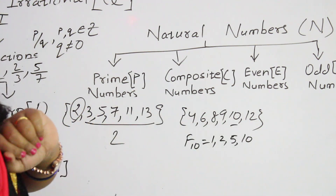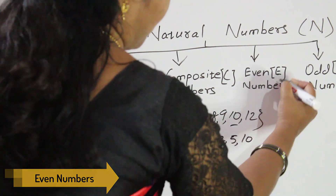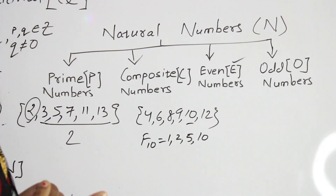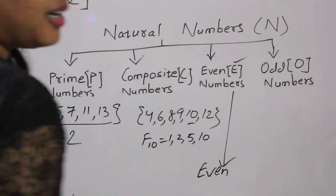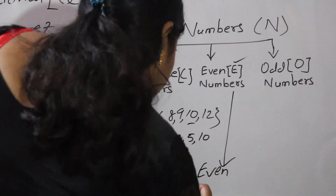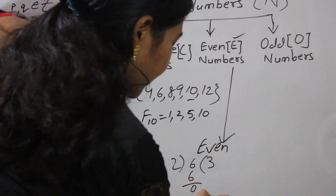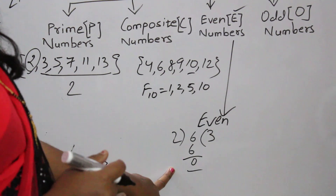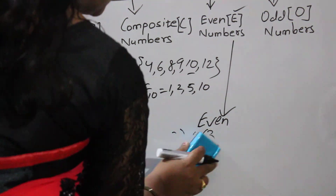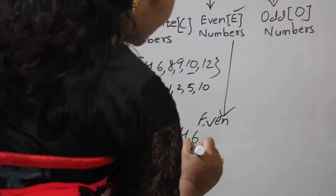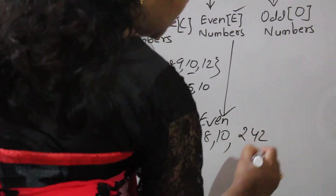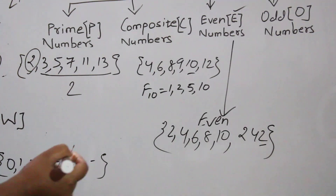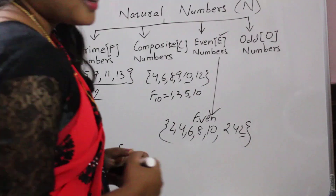Next we come to even numbers. All those numbers which are divisible by 2 are known as even numbers. For example, 6 divided by 2 gives remainder 0. If we divide a number by 2 and get remainder 0, such numbers are divisible by 2 and are called even numbers — like 2, 4, 6, 8, 10, 242, etc. Even number set is denoted by capital E.